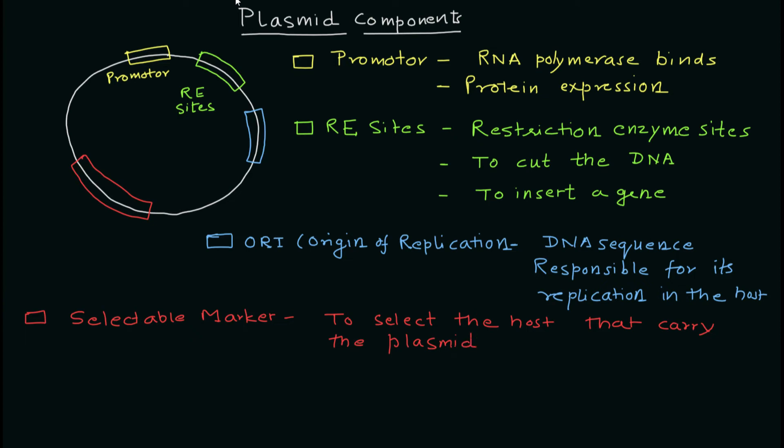To select the host that carries the plasmid, you need a specific characteristic. For example, AmpR, which is the ampicillin resistance gene. Because of this gene, bacteria will grow on media containing ampicillin.